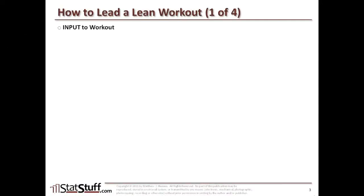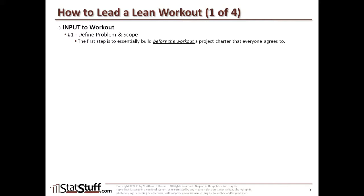Now that you can see there are just five basic steps for leading a lean workout applied to the IPO model, let's break each of those steps down in much more detail. Let's begin with the first step — the input into the lean workout process — which is where you want to define the problem and the scope for the workout. It's really essential that you build this before the workout actually begins. It might include elements you'd normally see within a project charter, and you want to make sure that everyone who's going to be part of the workout, or who sponsors it, agrees to those elements.